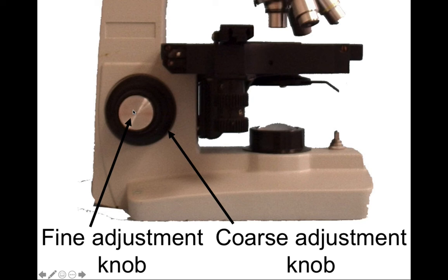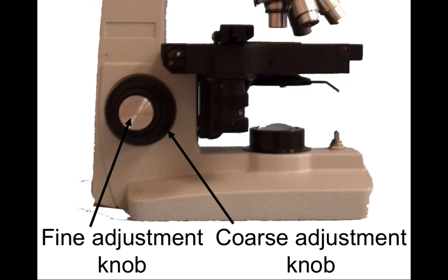The fine adjustment knob sticks out a little bit, and you'll be able to use them separately. The coarse adjustment knob produces a noticeable visual change in the distance of the stage from the objective lens, while the fine adjustment knob will not produce a visible difference in that distance. The coarse adjustment knob is typically what you'll use when readjusting microscope slides. You always want to make sure the stage is as far away as possible from the objective lenses so as not to damage or scratch them — this gives you more working space.